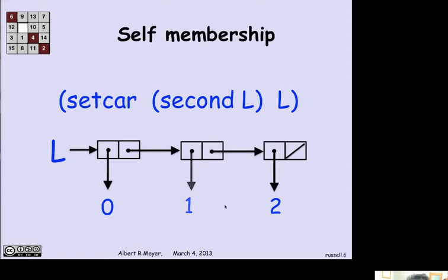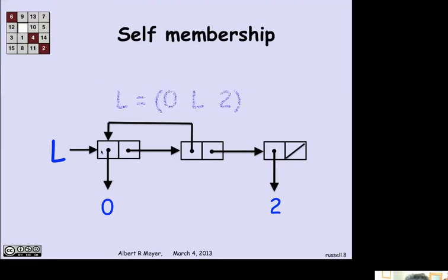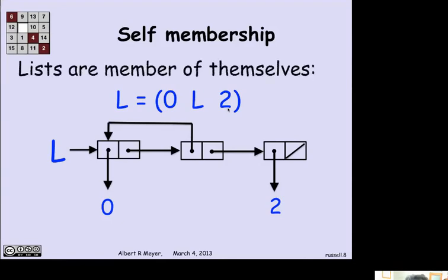What does that mean as a pointer manipulation? Well, it's pretty simple. I just move this pointer to point to the beginning of the list L. And now I have an interesting situation, because this list now is a list that consists of 0 and L and 2. It's a list that has itself as a member. And it makes perfect sense.